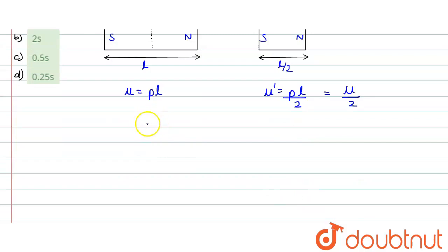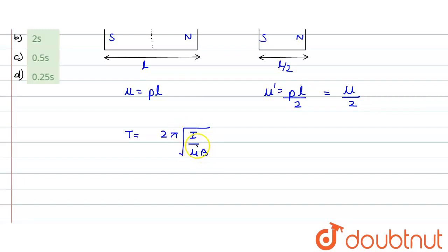The time period of a freely suspended magnet in a magnetic field is given by T = 2π√(I / μB), where I is the moment of inertia, μ is the magnetic dipole moment, and B is the magnetic field intensity. We are not changing B, but μ changes because we are cutting the magnet.